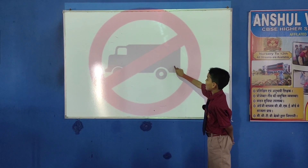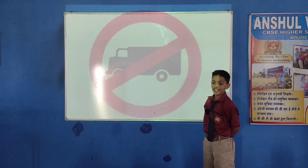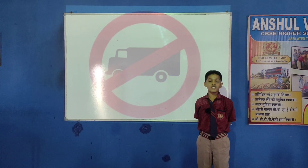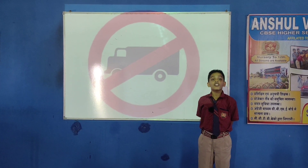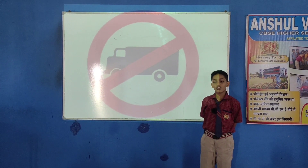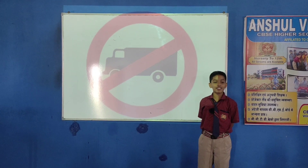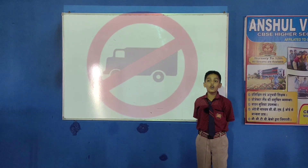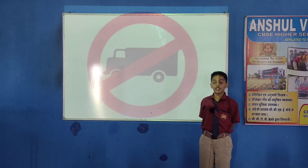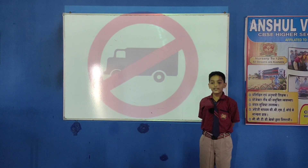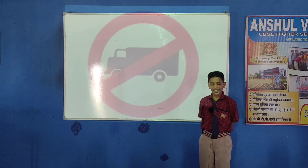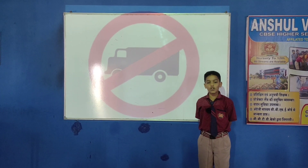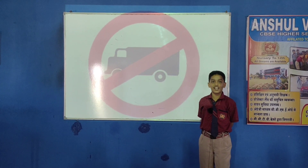This is the sign of heavy vehicles. This sign means no cars and motorbikes — only no motor vehicles are allowed here. If it is placed, it means no motor vehicles are allowed in that area.